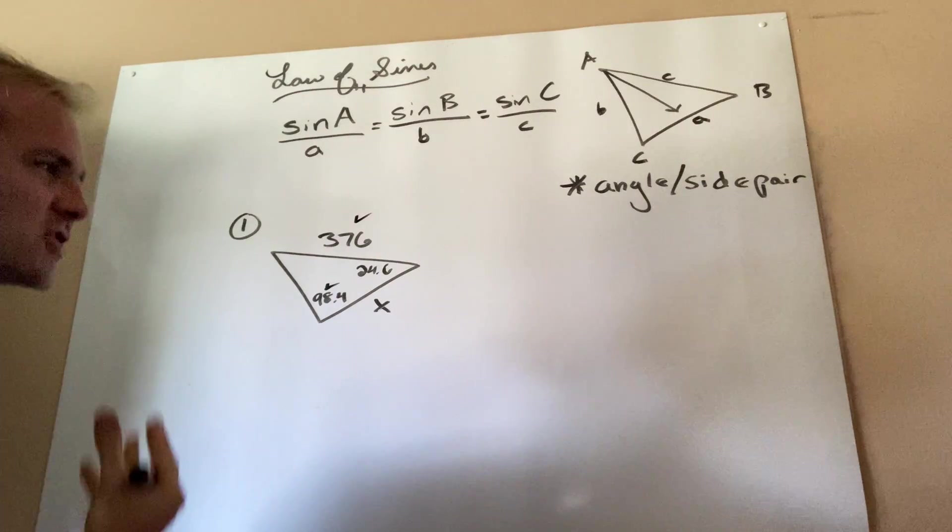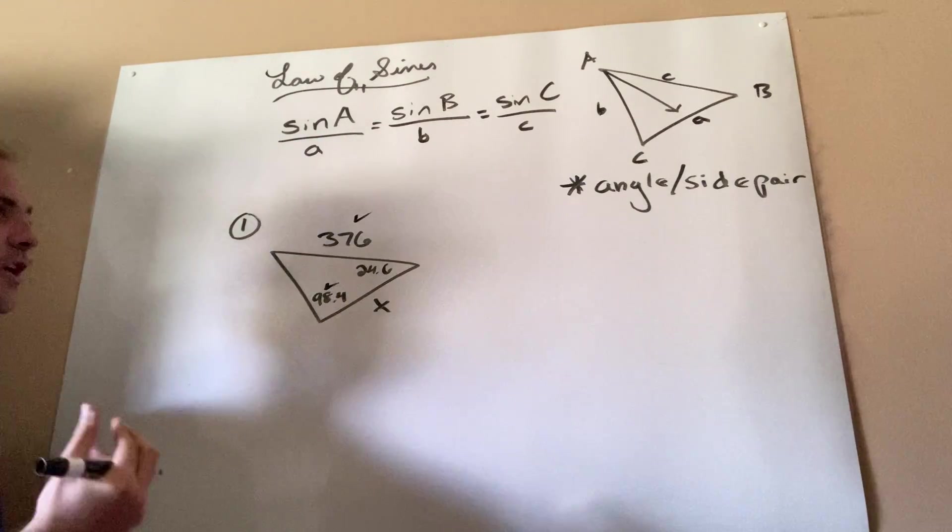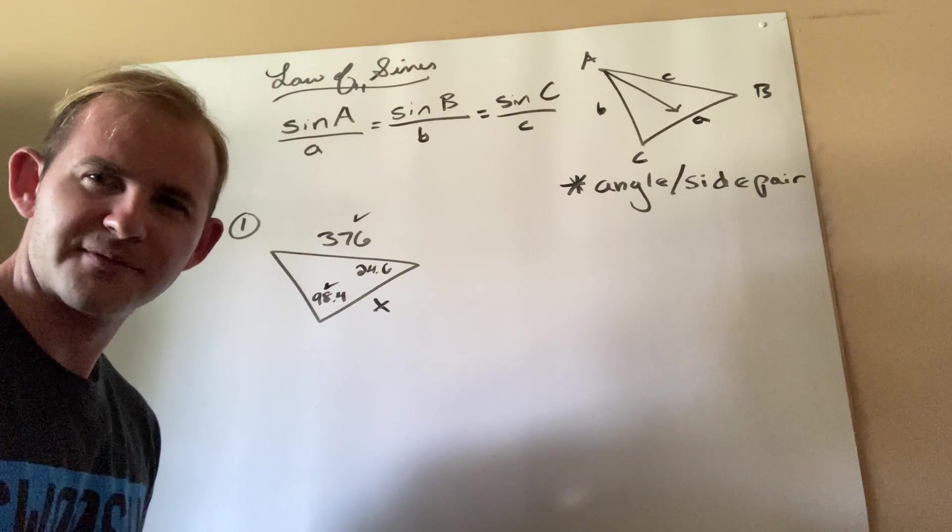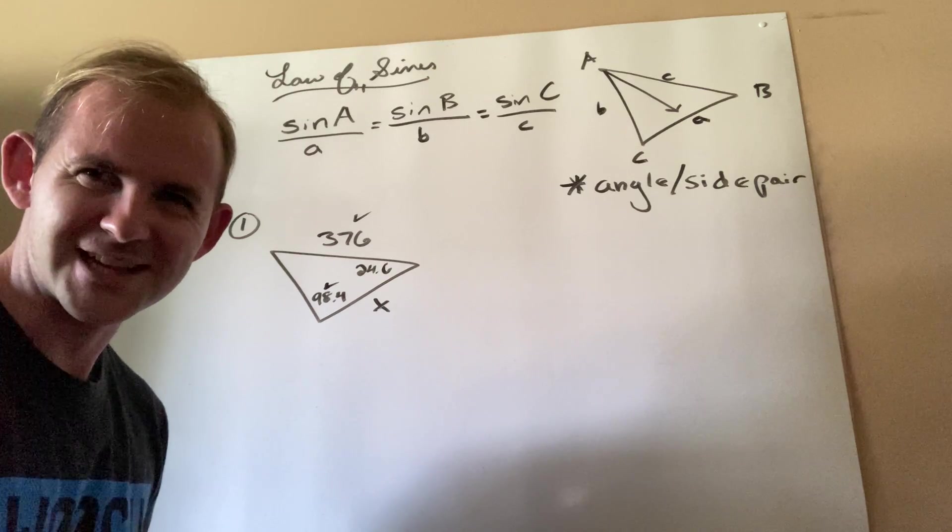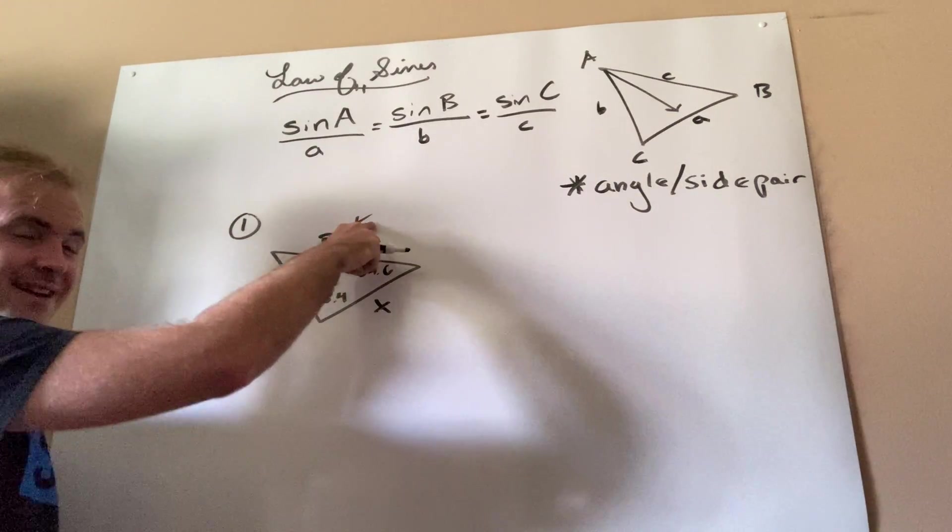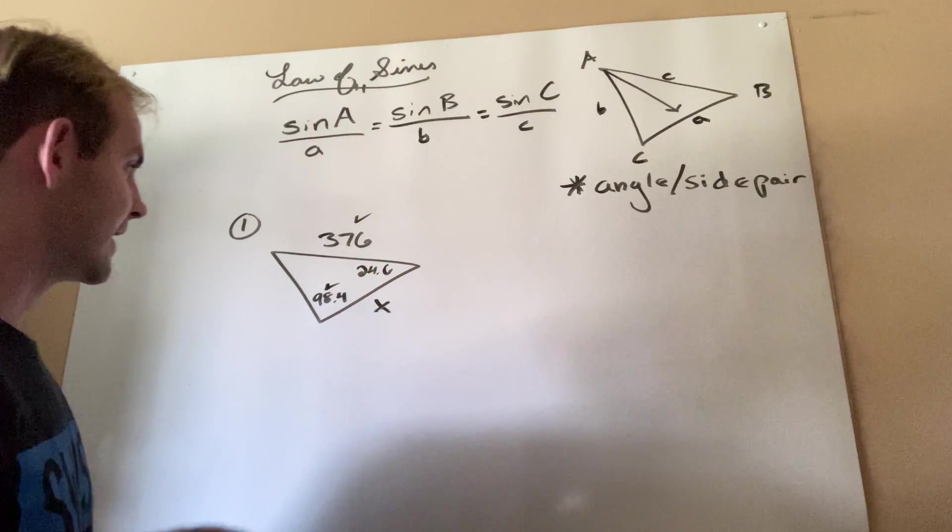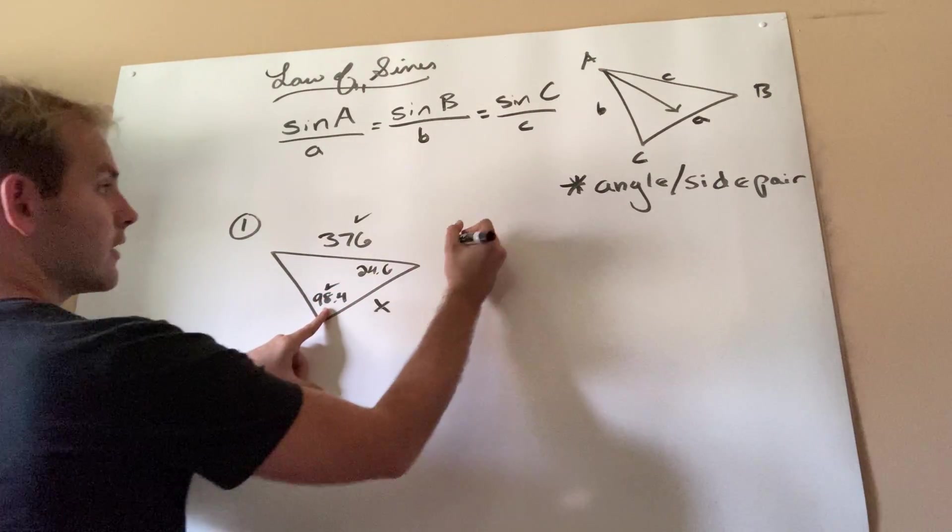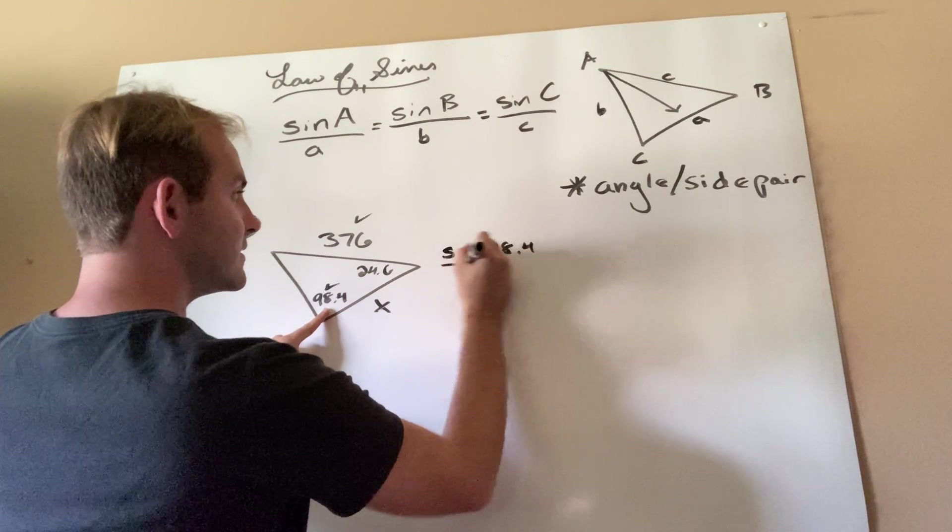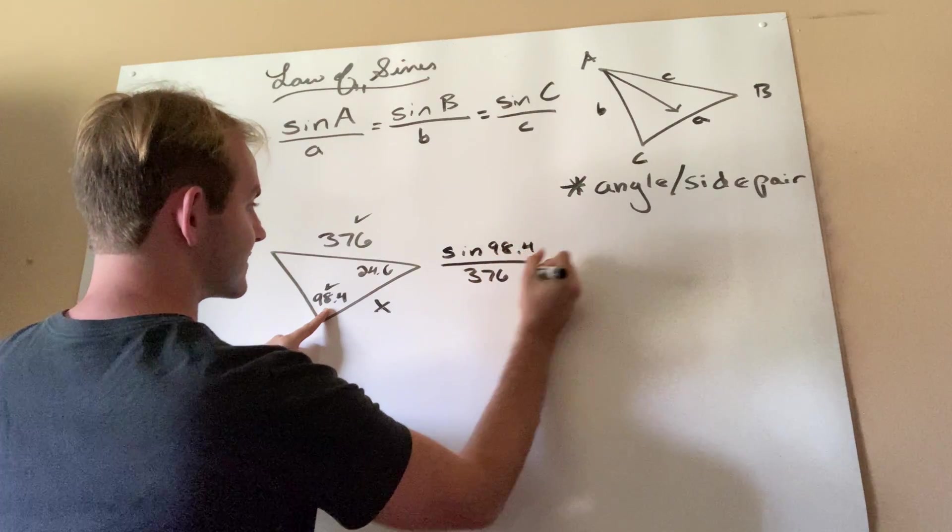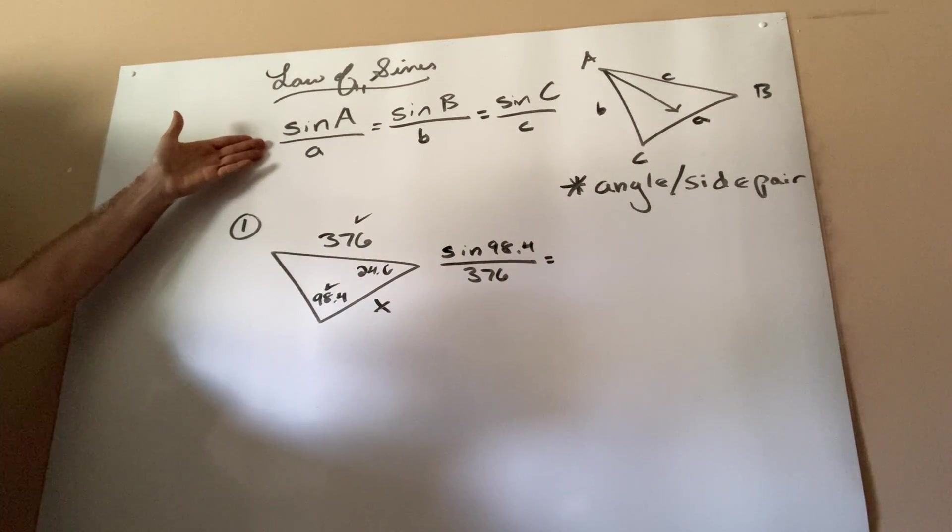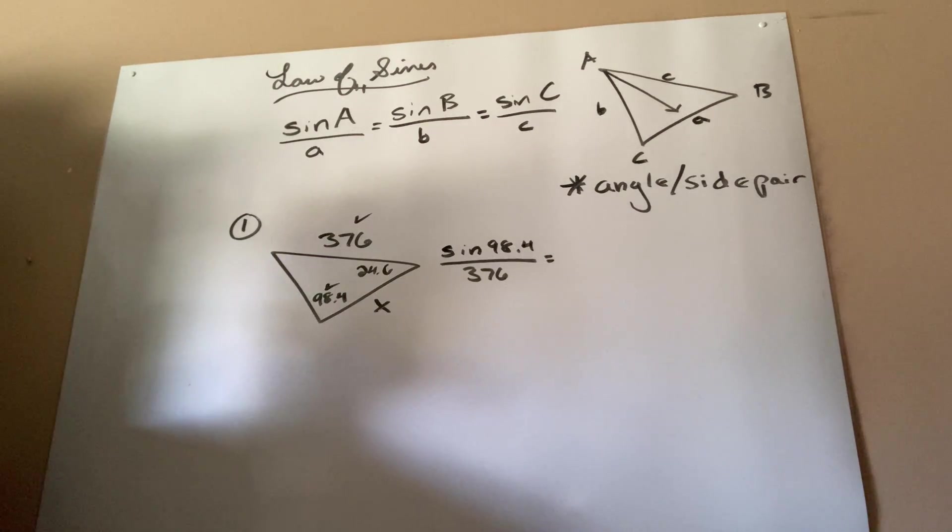So let's go ahead and start setting up the law of sines. I'm going to ignore the letters A, B, and C because quite frankly, they're completely and utterly irrelevant. All you need to know is sine of an angle over a side equals sine of an angle over a side. So I'm going to start off by saying sine 98.4 divided by 376. Why am I doing that? Well, that's what the law tells me. The sine of an angle over the side across from it.